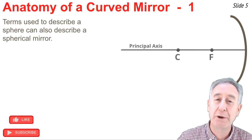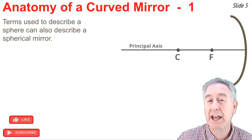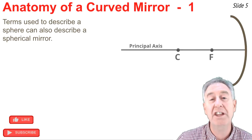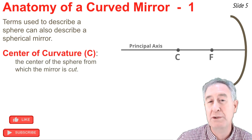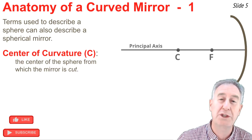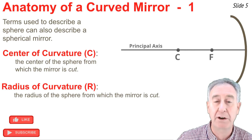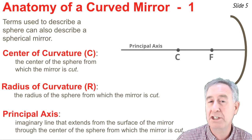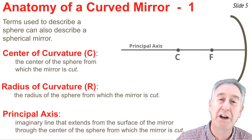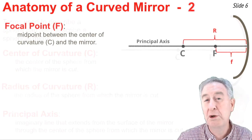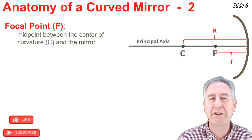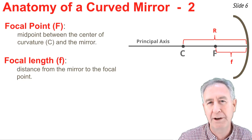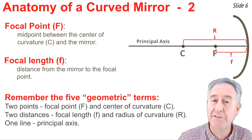It's important to understand the anatomy of a curved mirror and the terms used to describe it — each term has geometric meaning. The diagram shows a concave mirror with a line connected to its surface extended outward, along which are two points labeled C and F. The point C is the center of curvature — the center of the sphere from which the mirror was cut. The radius of curvature is the distance from the mirror to point C. The principal axis is an imaginary line extending from the mirror's surface through that center. The focal point F is the midpoint between the center of curvature and the mirror surface, and the focal length, marked little f, is the distance from the focal point to the mirror.